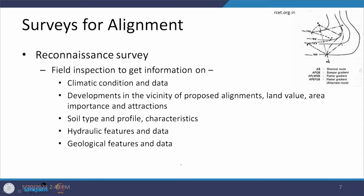Climatic conditions and meteorological data can be obtained for the last 5 or 10 years to identify what may happen in future. Any developments which have taken place, whether along the alignment or on its sides, can cause a change in land value. If land needs to be acquired for road construction along a specified alignment, this will add to the project cost. Any other developments creating attractions also need to be looked at in terms of traffic demand.